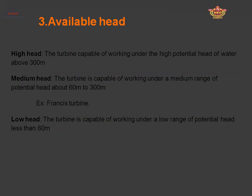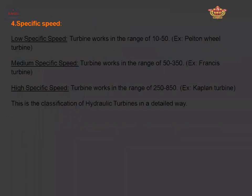The low head turbine works at heads below 60 meters. Regarding specific speed classification, there are three types: low specific speed, medium specific speed, and high specific speed. The low specific speed range is 10 to 50, and the Pelton wheel turbine falls in this category. The medium specific speed range is 50 to 350, and the Francis turbine is an example. The high specific speed turbine corresponds to the Kaplan turbine.